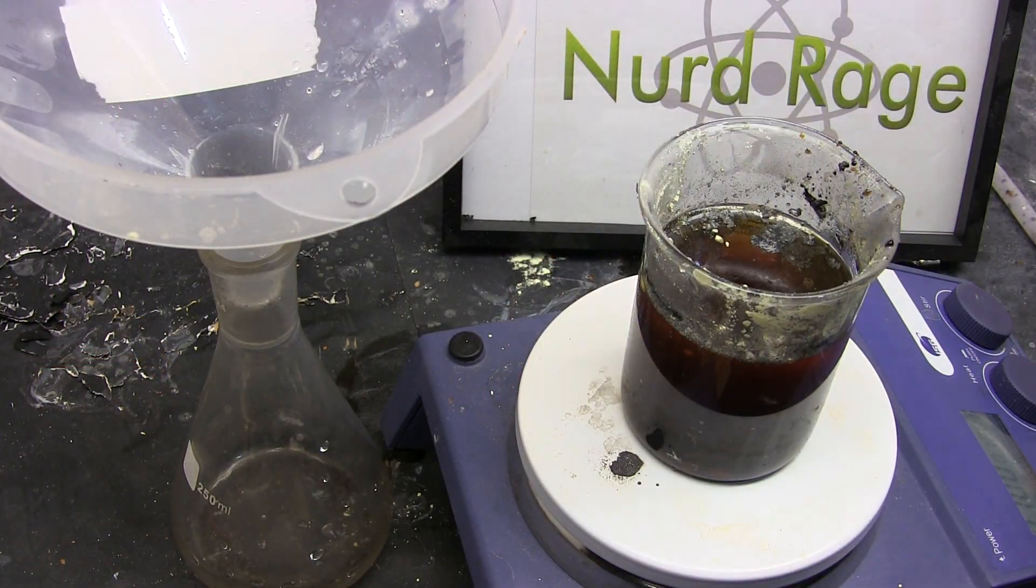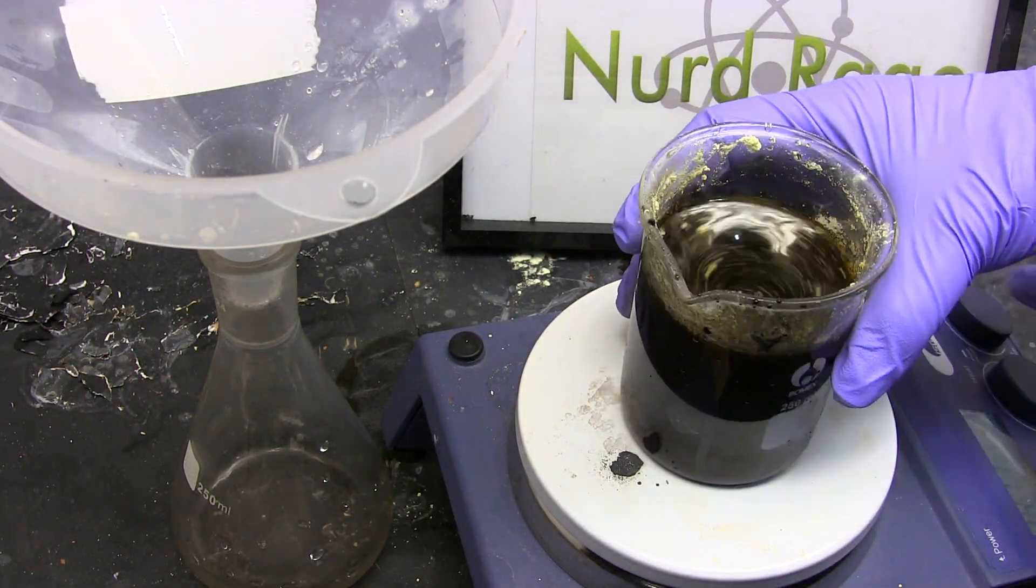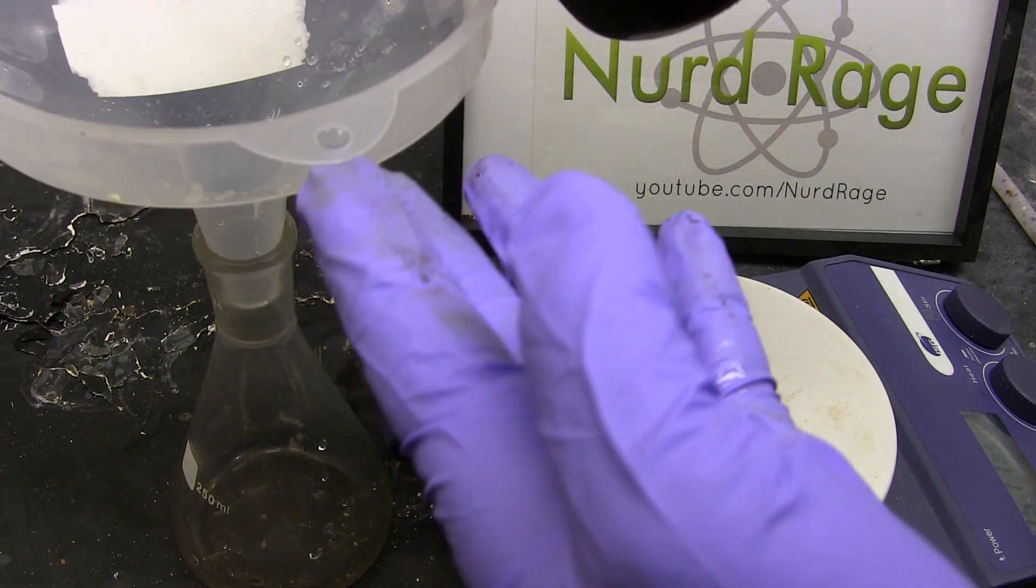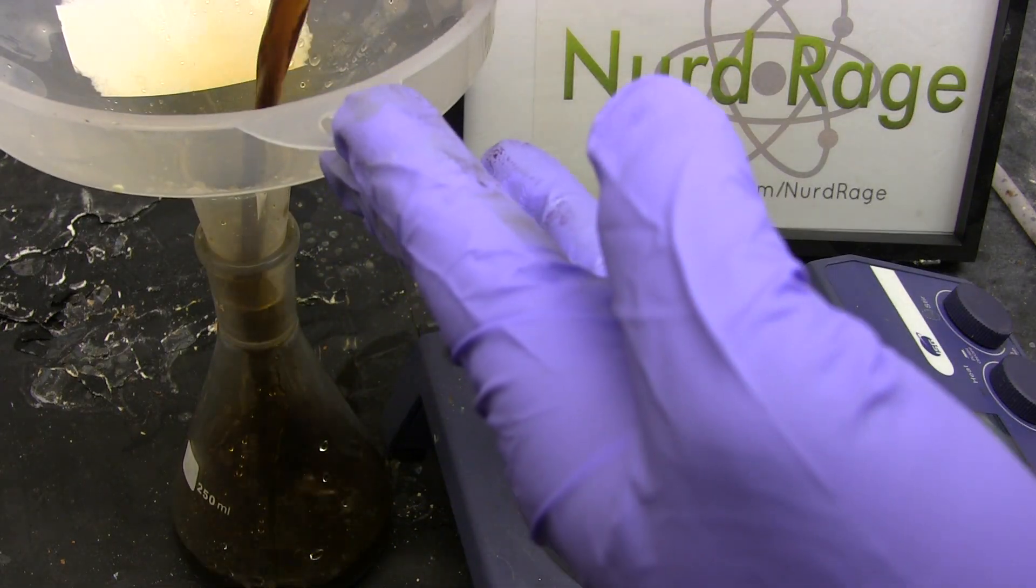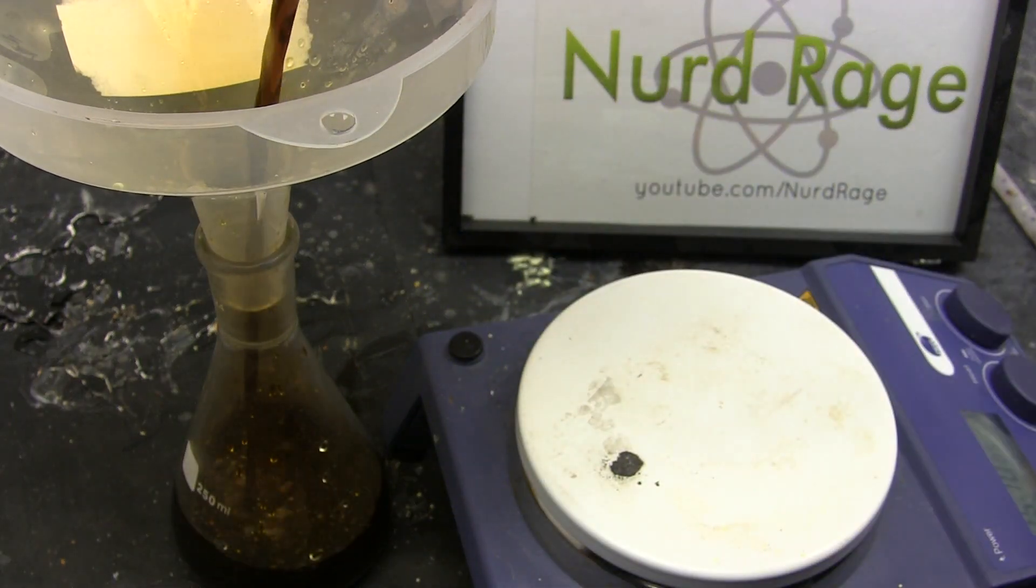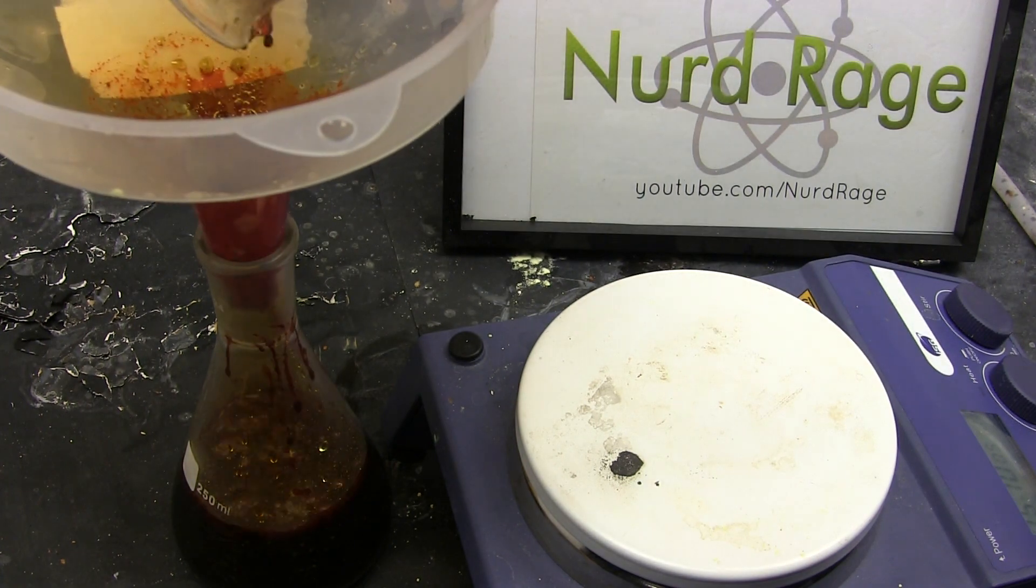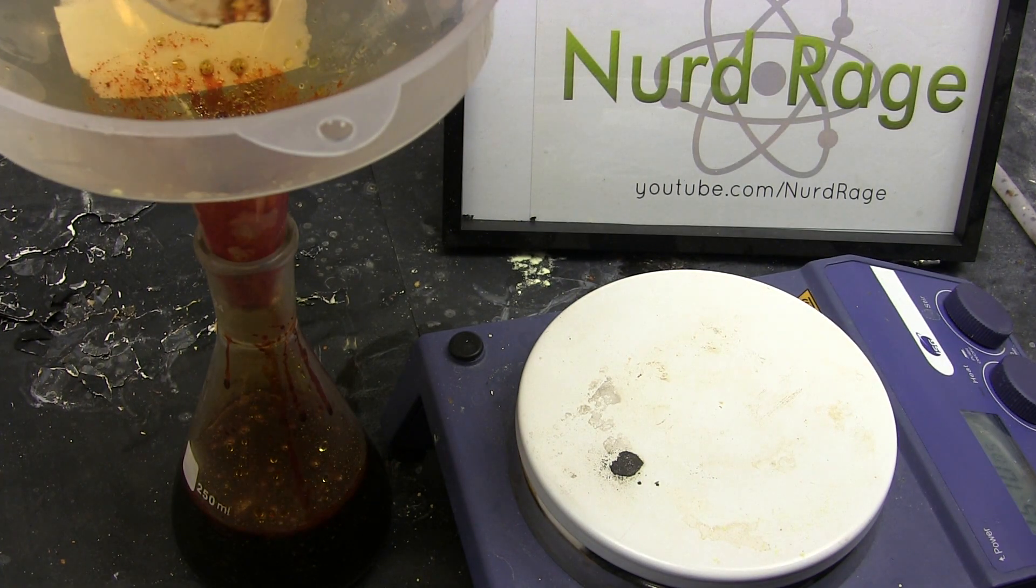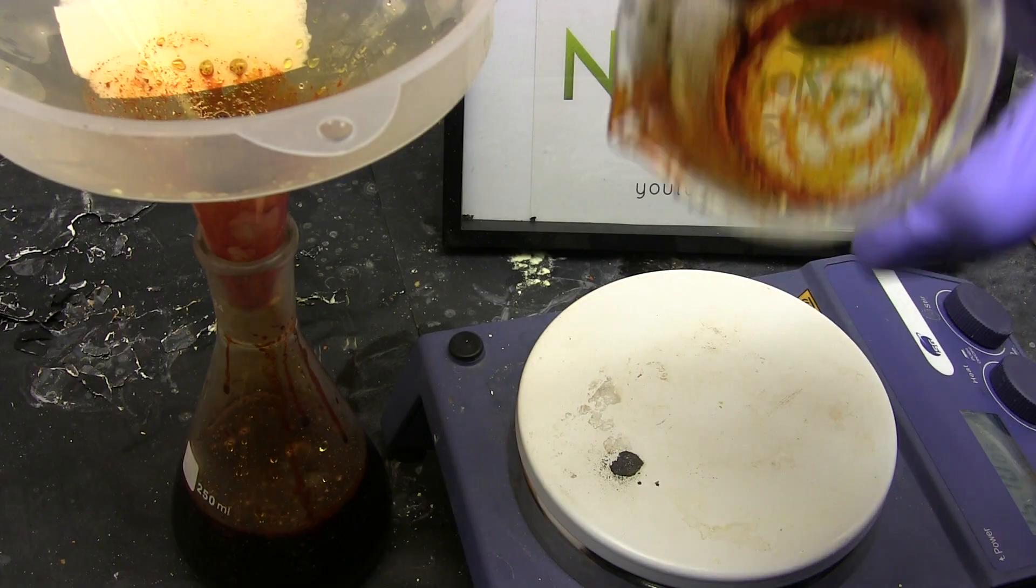Now the electrodes are removed and after a brief stir to mix everything up the mixture is transferred to an Erlenmeyer flask. I must emphasize again that you do this outside or in a fume hood as you can see bromine vapor coming off the mixture. Also sulfur bromides have their own unique stench that you don't want to sample.